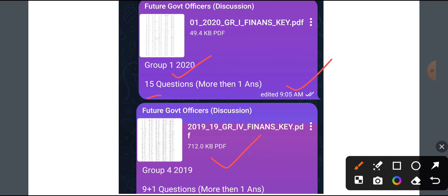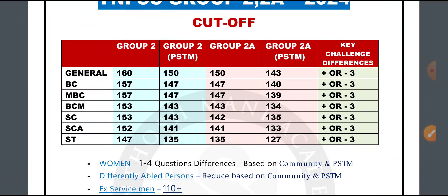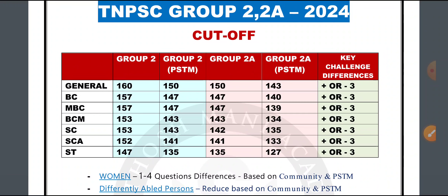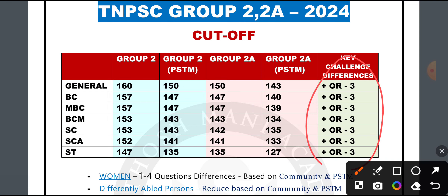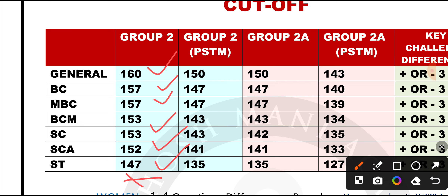The 20th group is 15 and the 10th group is 10. So if you have a final answer, there are differences and changes. If you look at the cut-off, the general category is 155. In BC and MBC, there are also 150. For BC and SC, there are three differences — BC and BC are 153, SC are 153, SE are 152, and ST is 167. So this is the cut-off. If you look at the number of questions, you can see Group 2 will clear.